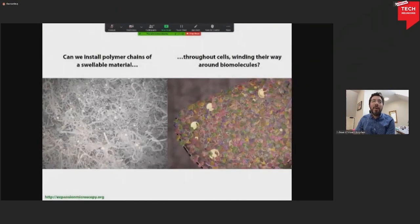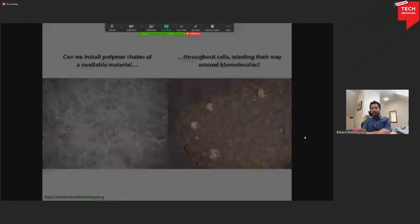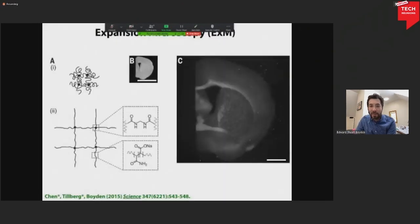So that's a basic question. Can we install this polymer spiderweb-like mesh of baby diaper material around and inside cells and tissues, densely and evenly? So getting to the punchline, to our surprise actually, this is kind of a cool discovery in a way, we could do that.